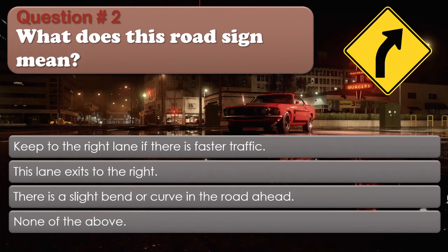Question number 2: What does this road sign mean? Options: Keep to the right lane if there is faster traffic. This lane exits to the right. There is a slight bend or curve in the road ahead. None of the above. The correct answer is There is a slight bend or curve in the road ahead.